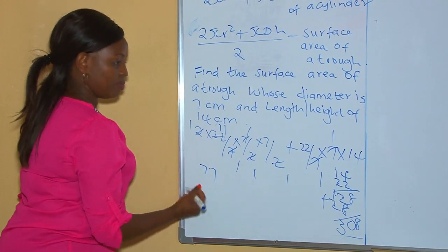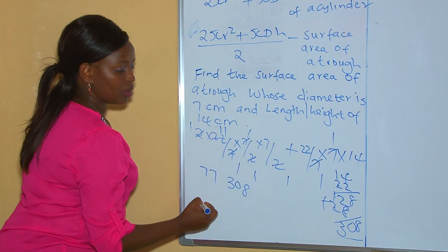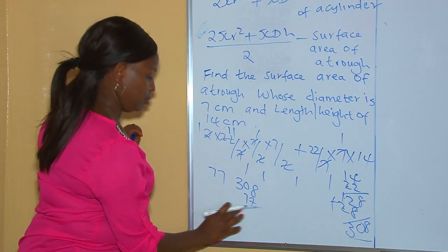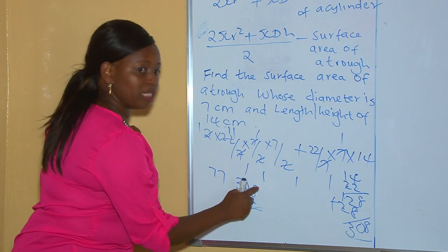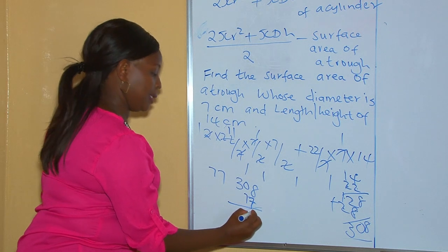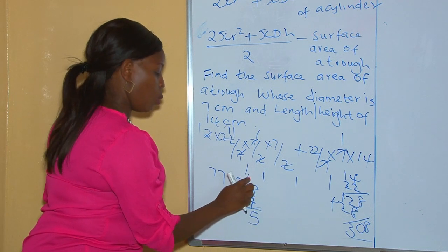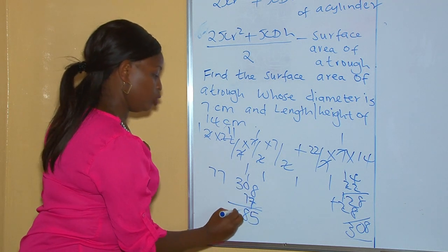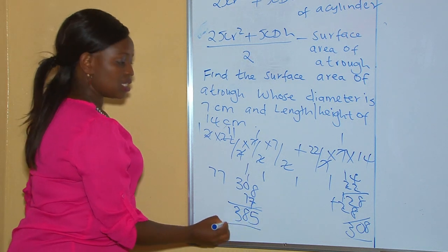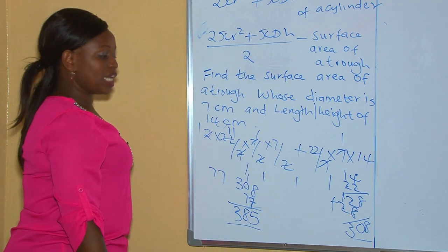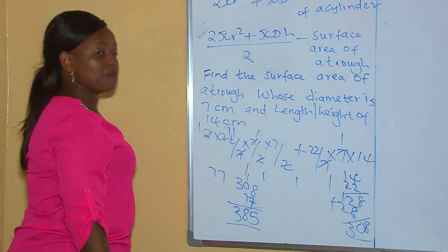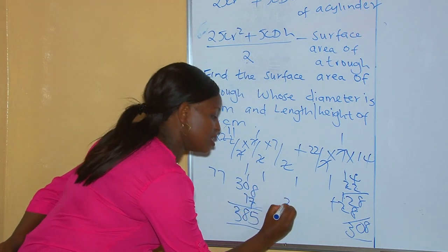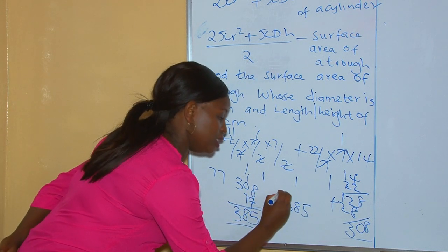Now we put both parts together: 308 plus 77. This gives us the surface area of the full cylinder. To get the surface area of a trough, remember it is the surface area of a cylinder divided by 2.